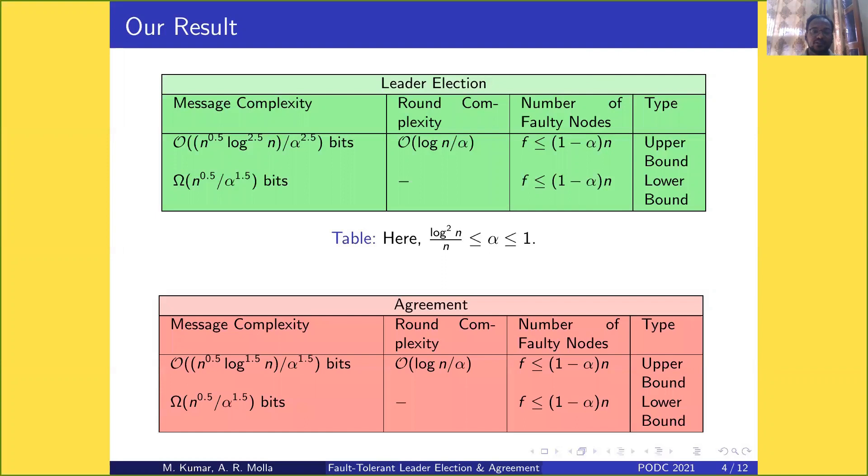For agreement, message complexity is somewhat less because agreement is an easier problem. In leader election, log is raised to power 2.5, here it's 1.5. For α's power, it's 2.5 in leader election and 1.5 in agreement.